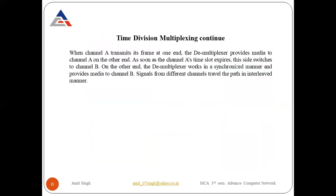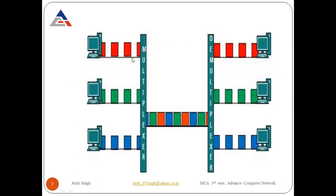When channel A transmits its frame, the demultiplexer provides media to channel A at the other end. As soon as channel A's time slot expires, both sides switch to channel B simultaneously. The demultiplexer works in synchronized manner and provides media to channel B. Signals from different channels travel the path in an interleaved manner. When the multiplexer and demultiplexer are synchronized, the demultiplexer automatically routes each signal to the correct channel.